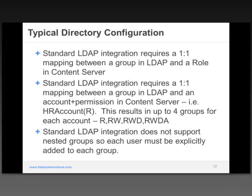The standard configuration for Web Center includes a mapping of one group in the directory to a role or an account with permissions in content server. If there are four groups in Active Directory and you need to assign those to various groups with different roles — read, read/write, read/write/delete, read/write/delete/admin — you can imagine that with all the groups and all the permissions they need, that could quickly get very large and impact performance. The other thing to mention is that the standard integration doesn't support nested groups or group of a group, so you can't transfer group permissions from one nested group to another.